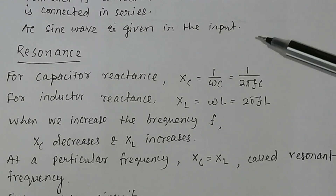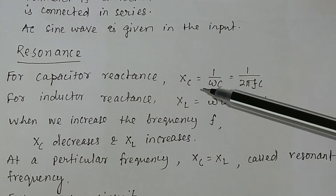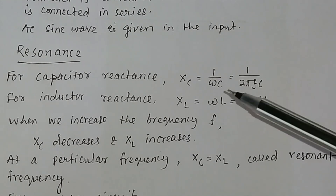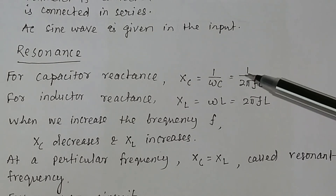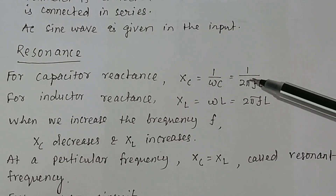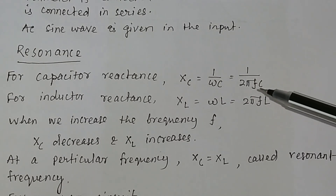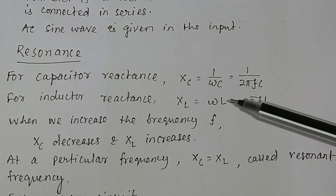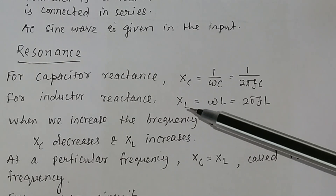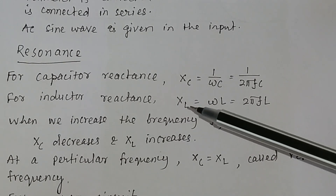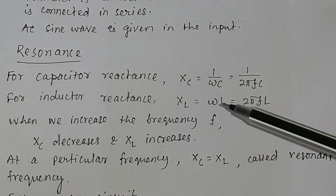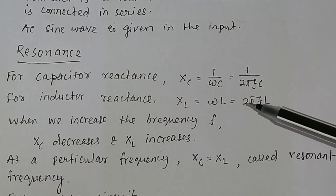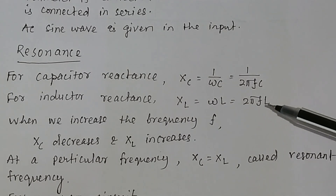What is resonance? For a capacitor, the reactance Xc is equal to 1 divided by omega C, that is equal to 1 divided by 2 pi F C. For an inductor, the inductive reactance XL is equal to omega L, which is equal to 2 pi F L.